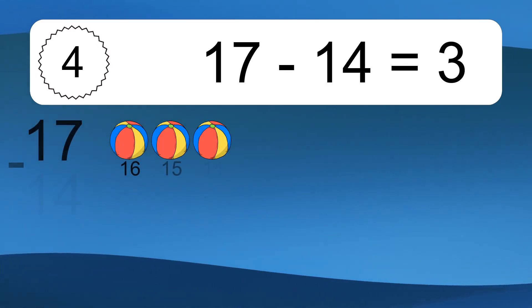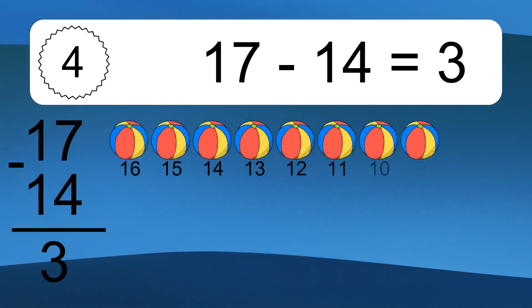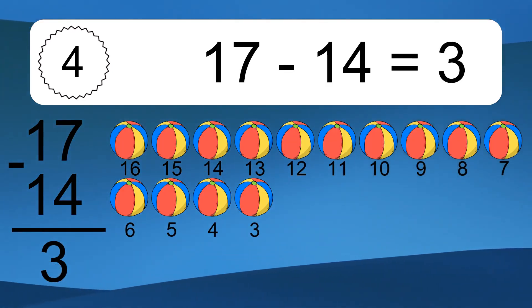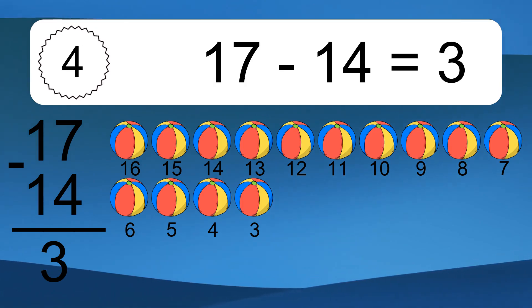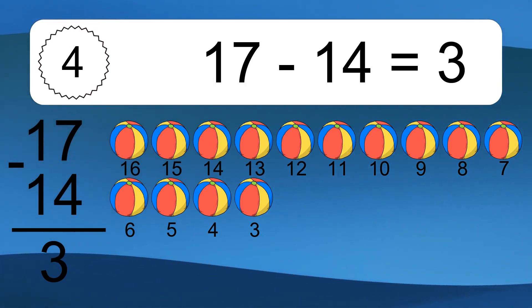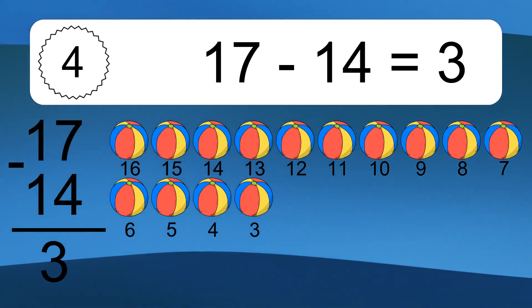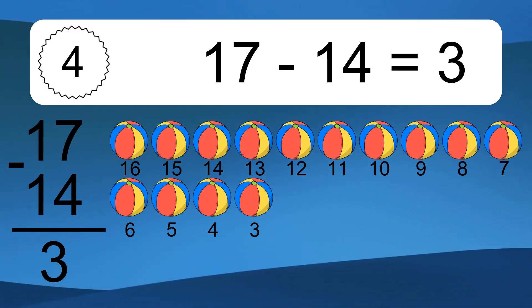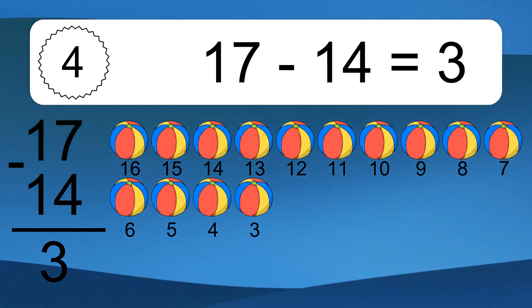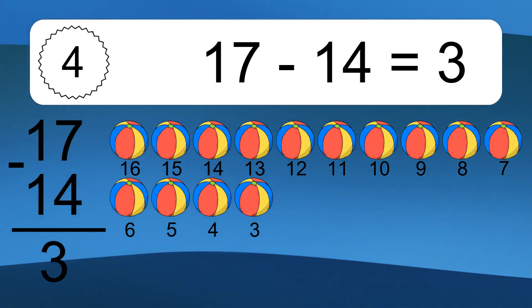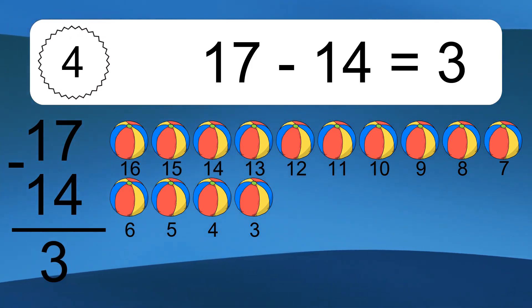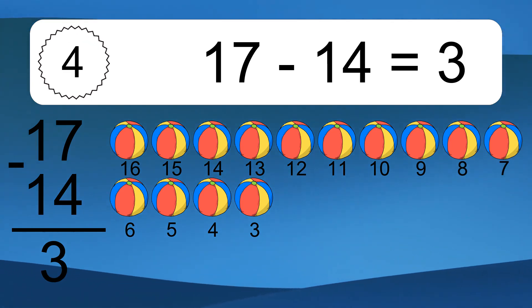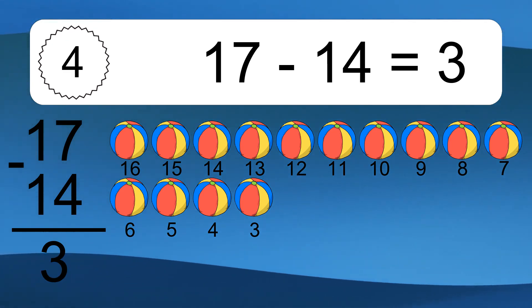17 minus 14 equals what? 17 minus 14 equals 3. Let's count it. 16, 15, 14, 13, 12, 11, 10, 9, 8, 7, 6, 5, 4, 3.